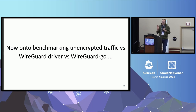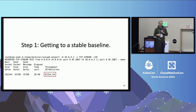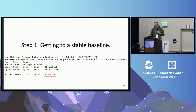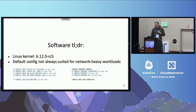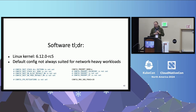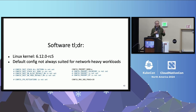Let's go into the benchmarking. We looked into unencrypted traffic versus the WireGuard kernel driver and also the WireGuard Go implementation. Before that, we wanted to get to a stable baseline. On 100 gigabit NICs going over bare metal, it's actually not easy for a single flow to reach 100 gigabit per second. In terms of hardware, we had a standard off-the-shelf AMD CPU with PCIe 4 and ConnectX-6 NVIDIA NICs. For software, we used a regular Linux kernel 6.12 from Linus Torvalds' Git tree and changed a couple of kernel configs.